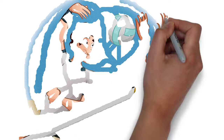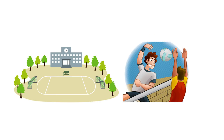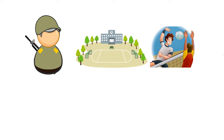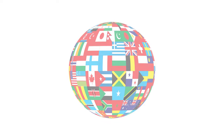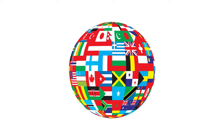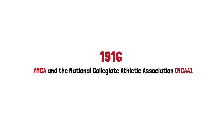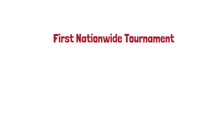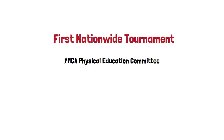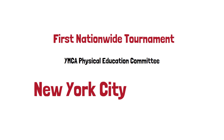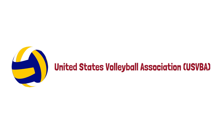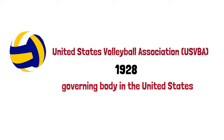The game soon proved to have wide appeal for both sexes in schools, playgrounds, the armed forces, and other organizations in the United States, and it was subsequently introduced to other countries. In 1916, rules were issued jointly by the YMCA and the National Collegiate Athletic Association, NCAA. The first nationwide tournament in the United States was conducted by the National YMCA Physical Education Committee in New York City in 1922. The United States Volleyball Association, USVBA, was formed in 1928 and recognized as the rules-making governing body in the United States.